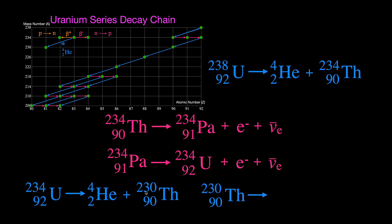Thorium-230 undergoes alpha decay once more, giving us radium. That completes five decay steps: uranium-238 → thorium-234 → protactinium-234 → uranium-234 → thorium-230 → radium. Once you've worked through a few of these you should get the hang of writing the decay equations.